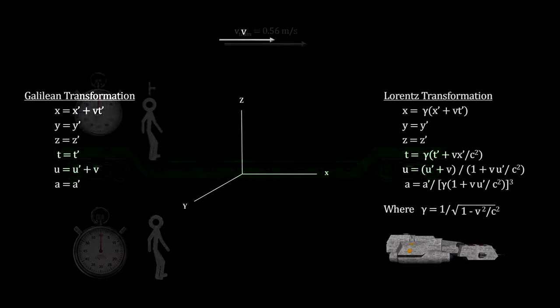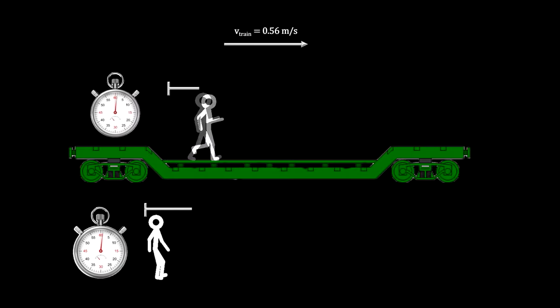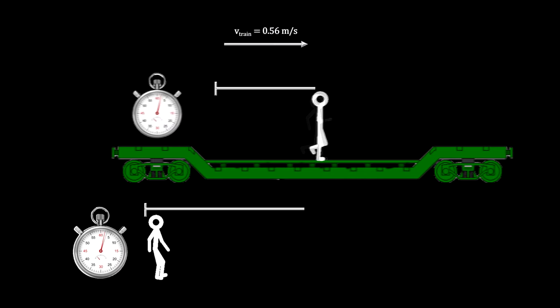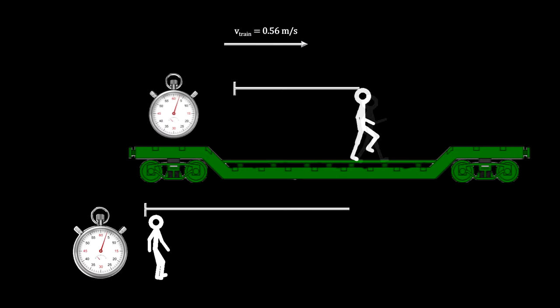You'll recall from our previous segment on the speed of light that the classical transformation simply added the speed of movement in a reference frame to the speed of the reference frame itself.